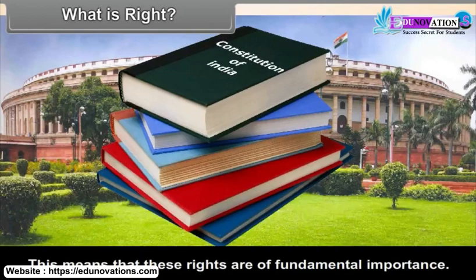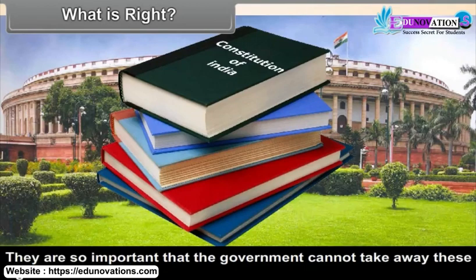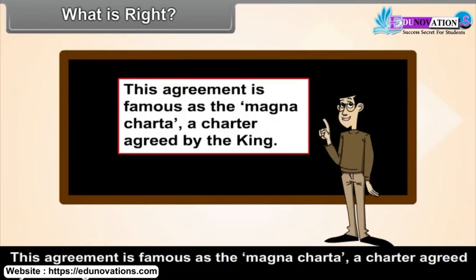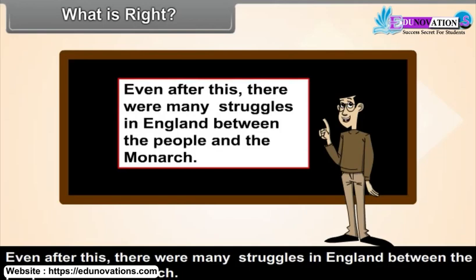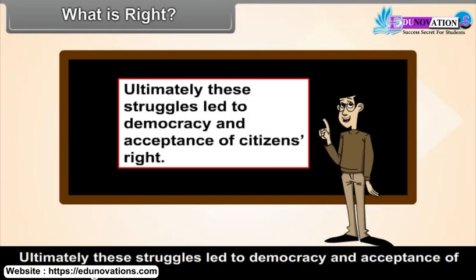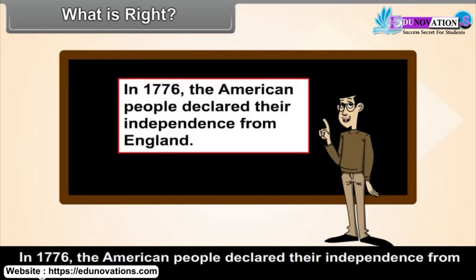Long back in 1215, the British monarch had to agree to some restrictions over monarchical powers. This agreement is famous as the Magna Carta, a charter agreed by the king. Even after this, there were many struggles in England between the people and the monarch. Those struggles resulted in many more limits on the powers of the king or queen. Ultimately, these struggles led to democracy and acceptance of citizens' rights.